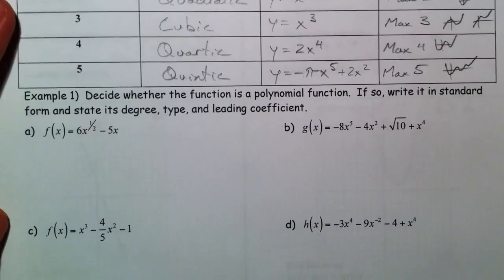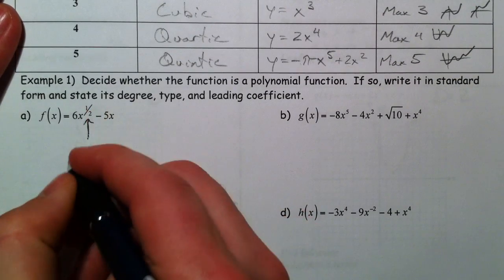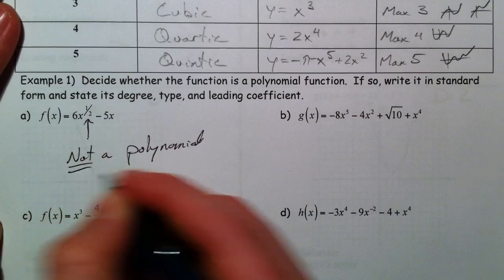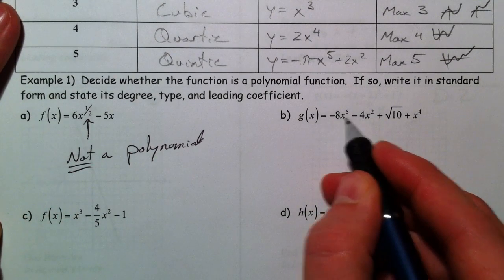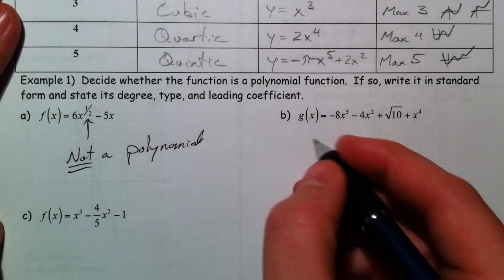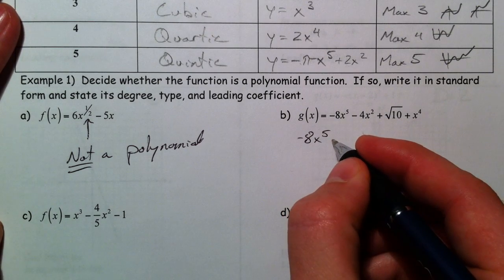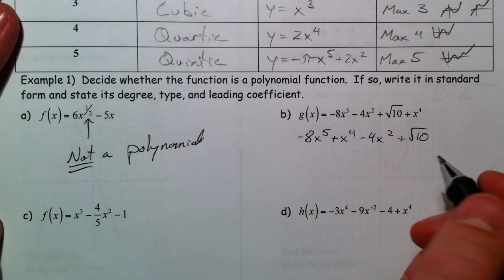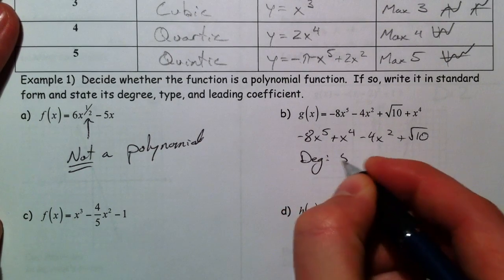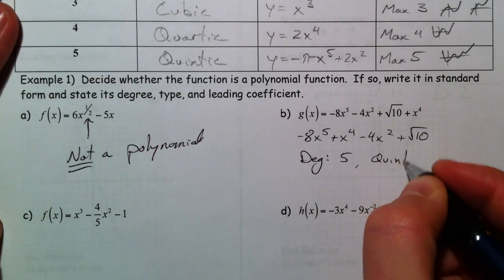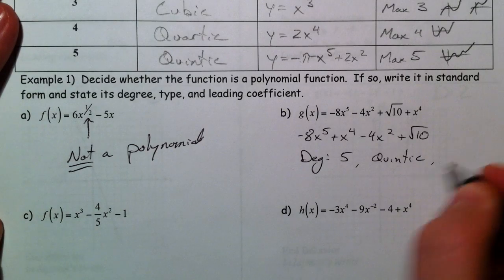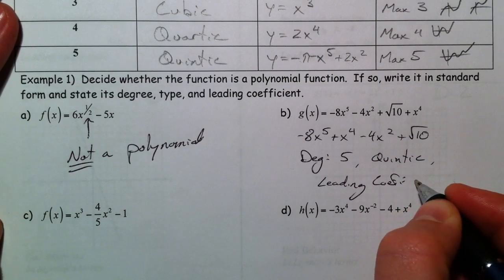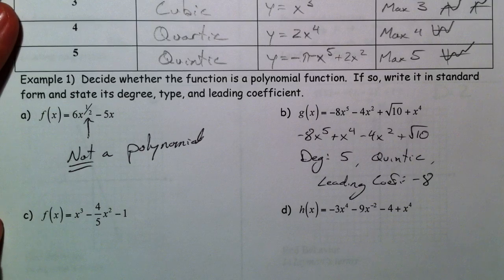Let's decide whether something is a polynomial function and be able to recognize it. This one is not a polynomial. The next one: we've got degree 5 and degree 4 terms. Writing it in standard form, let's write the x to the fourth next, and the plus root ten. So we're okay — it is a polynomial. Degree 5. Type: quintic. The leading coefficient is going to be very important — that's the number out in front.